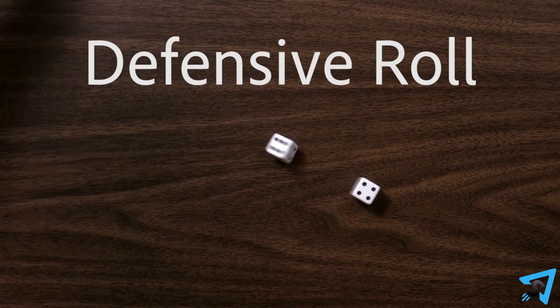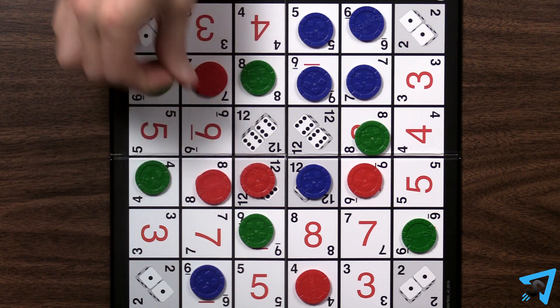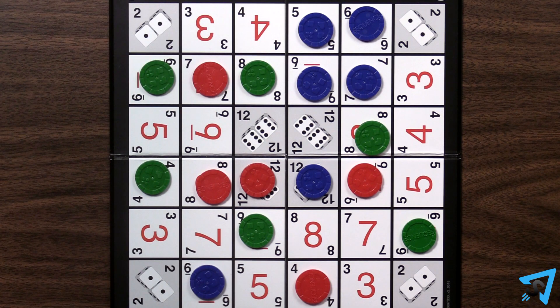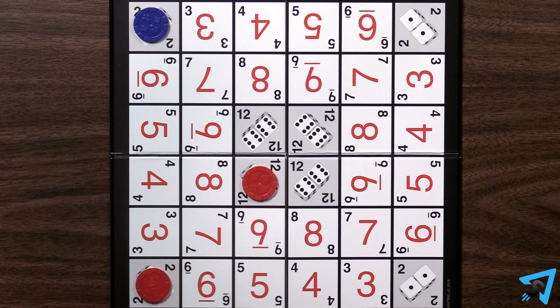If you roll a 10, called a defensive roll, you must remove any one of your opponent's chips from the board. However, you may not remove from the gray 2 or 12 spaces. If there are no legal chips for you to remove, then you end your turn.